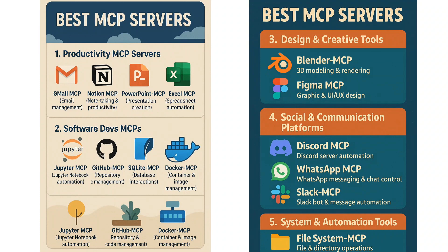Playwright MCP enables browser automation — you can ask it to put an item in your Amazon cart, and it will go to Amazon, click, and make a purchase for you on your behalf just by giving a prompt. So this is it — these are some of the best MCP servers I've explored so far. I'm still exploring a few more, so I'll be updating this list, but for now I think these are the must-have MCP servers for your local system. Thank you so much!